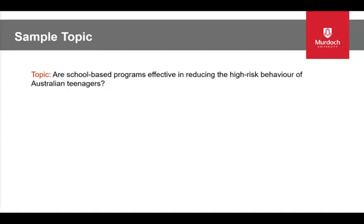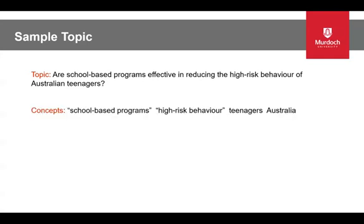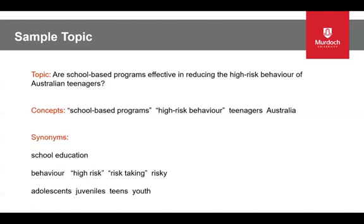Here is a sample topic: Are skill-based programs effective in reducing the high-risk behaviour of Australian teenagers? This is the brief description of your topic. You need to pick out and identify the main concepts of your research topic — and this can be words or phrases. It's a good idea to circle these or just to write them out separately. So the concepts for this topic are school-based programs, high-risk behaviour, teenagers, and Australia.